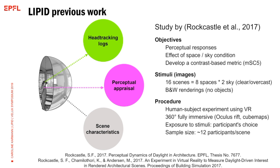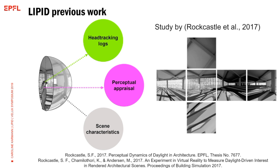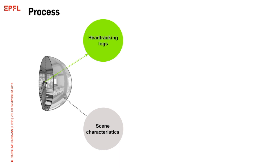It was based on 16 scenes. All images were black and white and rendered, with two sky conditions studied: a bright clear sky, which brought a lot of shades within the space, and an overcast sky. It was a 360 fully immersive experience using VR, with scenes modeled as cubemaps. Head tracking logs were gathered throughout the study, with about 12 participants per scene and sky condition — close to 200 logs in total.